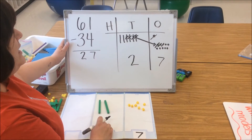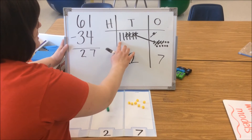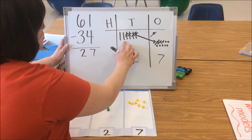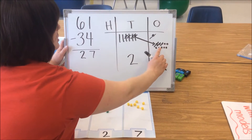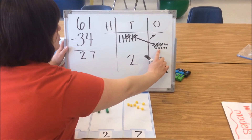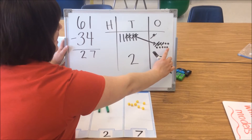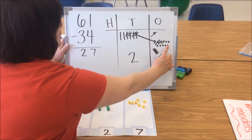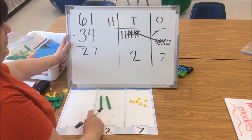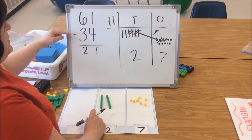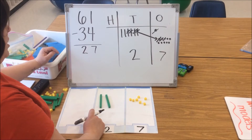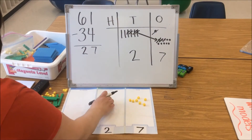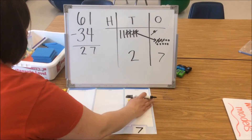Again, it's always important to count your model: 10, 20, 21, 22, 23, 24, 25, 26, 27. So 61 minus 34 is 27 using the decomposing strategy.